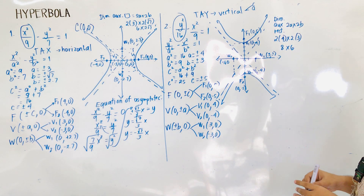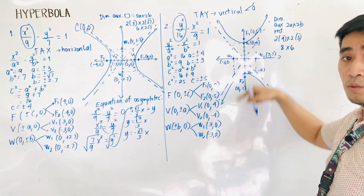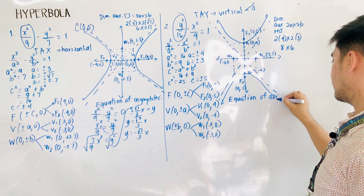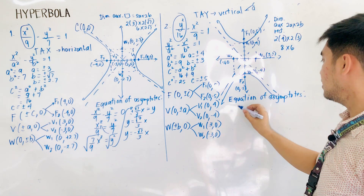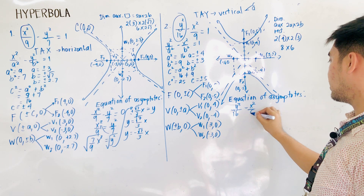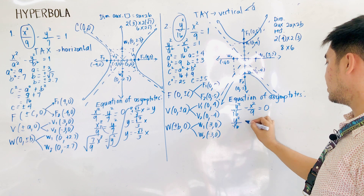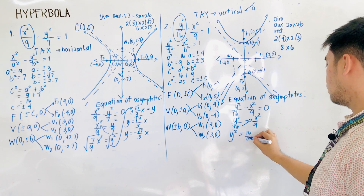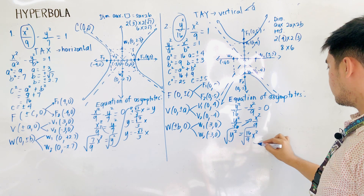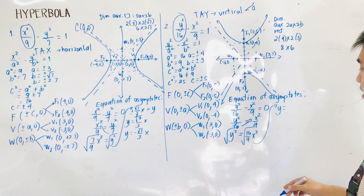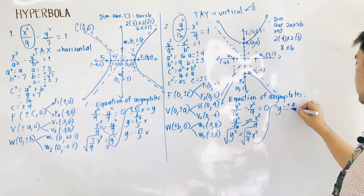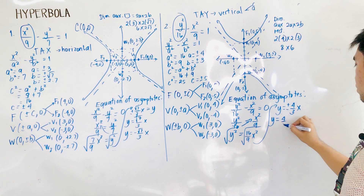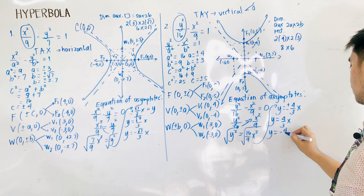For the equation of the asymptotes, we write y squared over 16 minus x squared over 9 equal to 0. Therefore y squared over 16 equals x squared over 9. Cross-multiplying and taking the square root gives y equals plus or minus 4 over 3 times x — two asymptote equations, one positive and one negative.